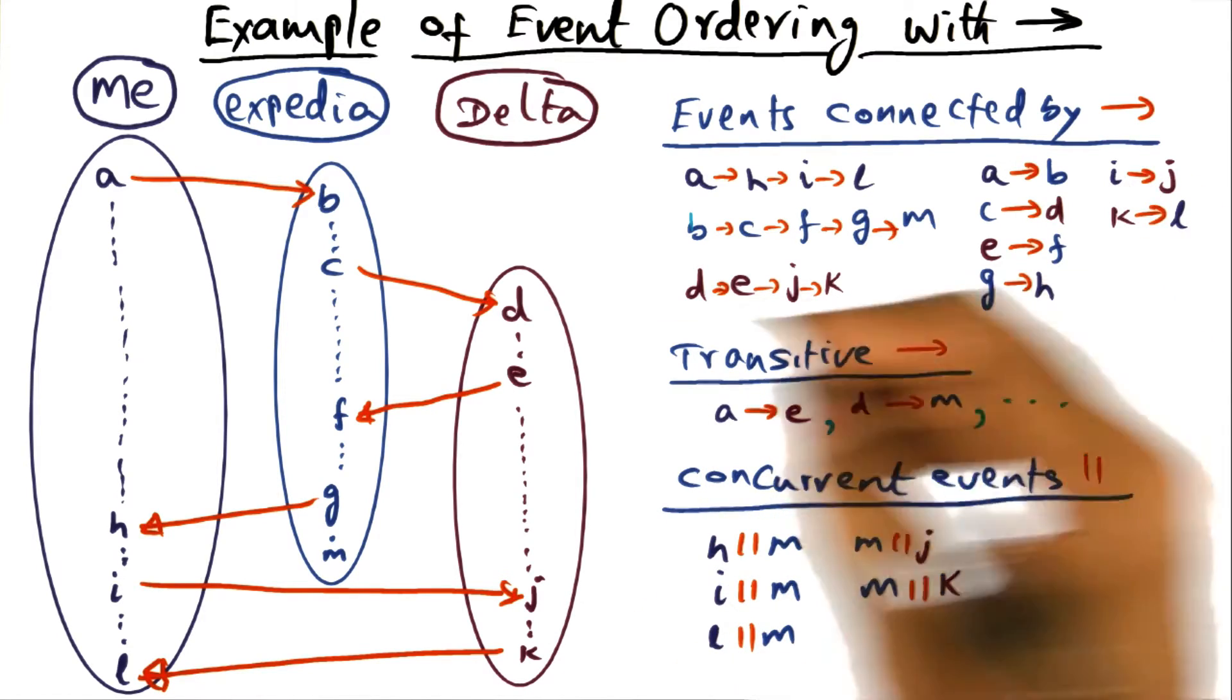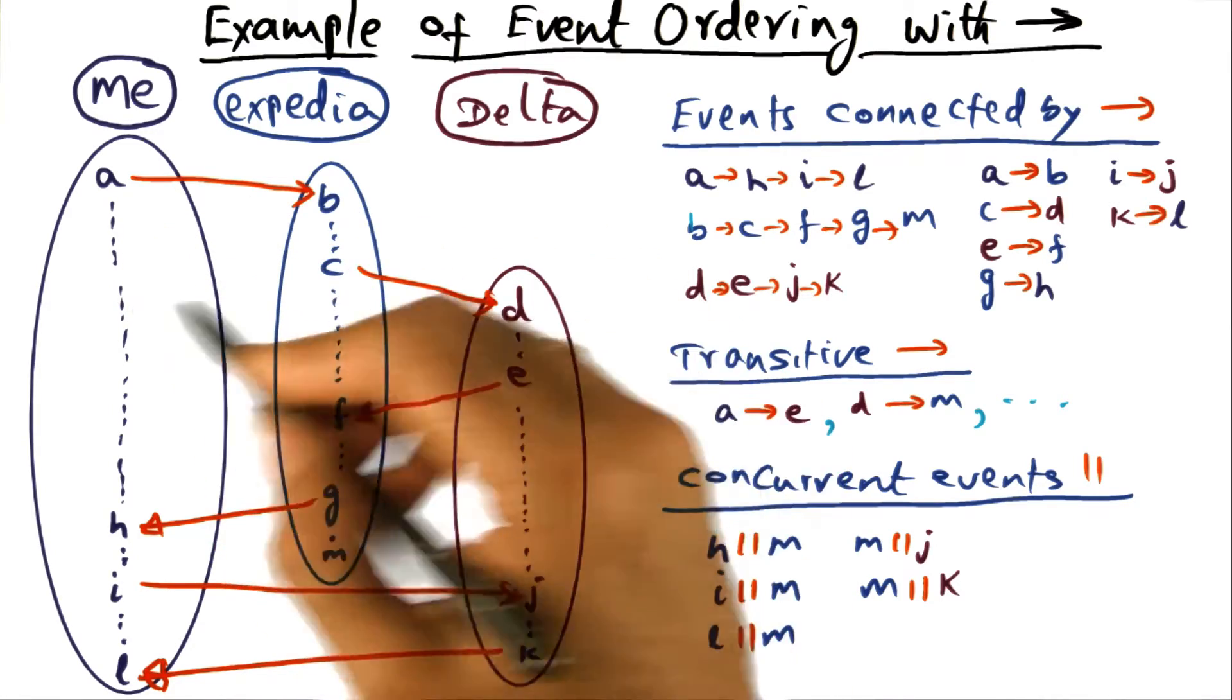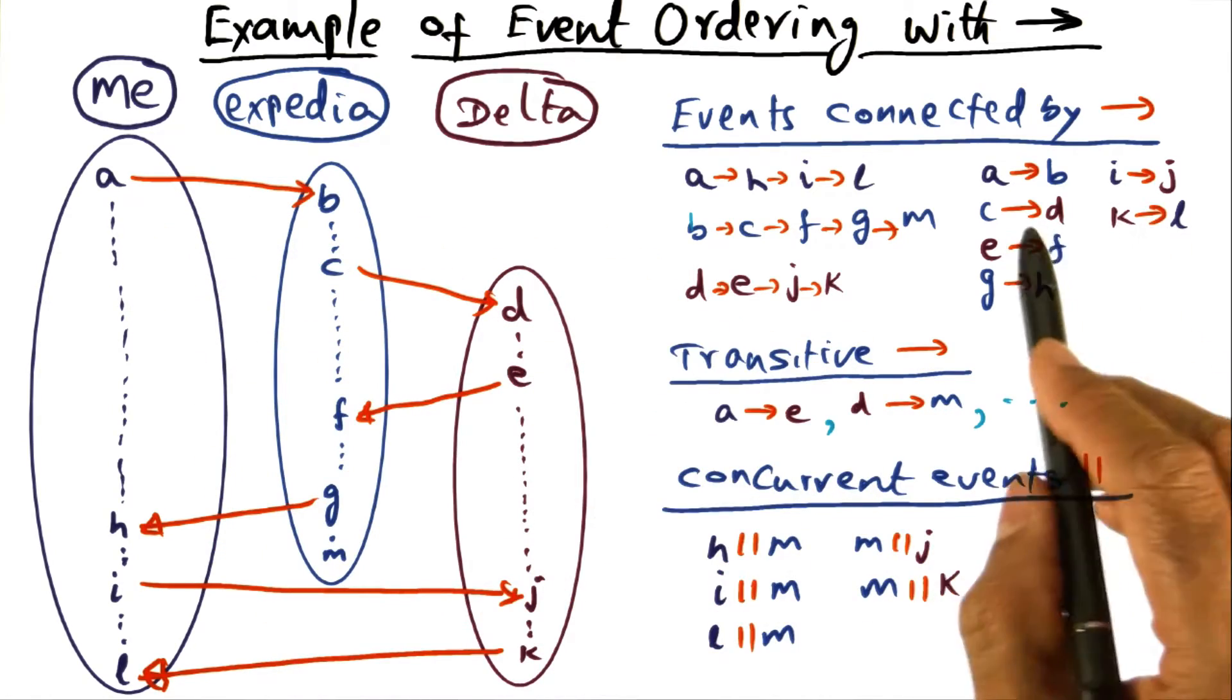And these are all the communication events that are directly relating events happening between any two processes that I'm showing you in this picture. So for instance,